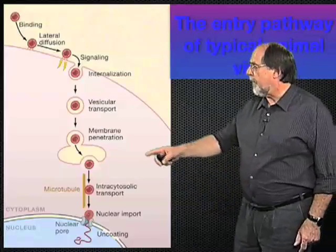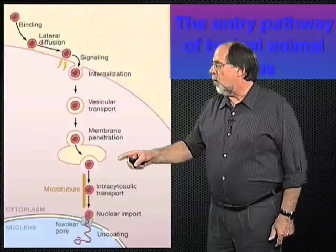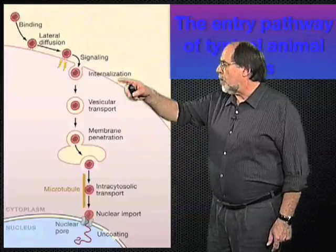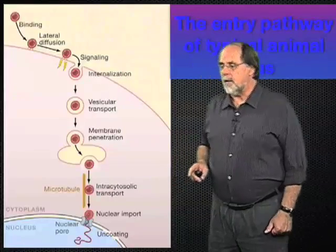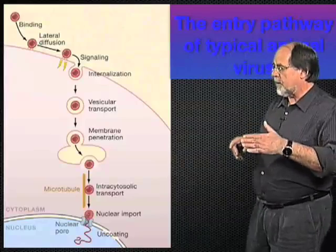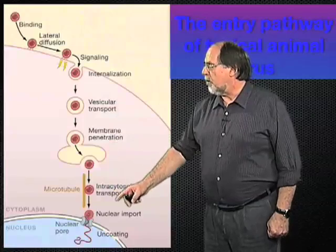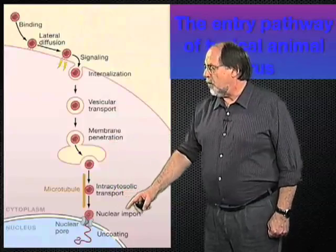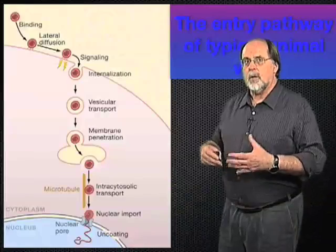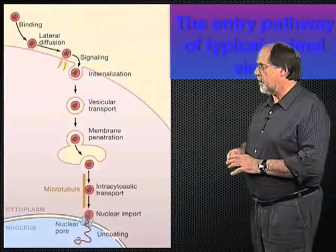Viruses that replicate in the cytosol have different other locations where they are moved. Looking at this whole pathway, you can see there is a whole program of consecutive steps resulting finally in the transport of the genome into a specific location. That is also where the final uncoating of the genome takes place.